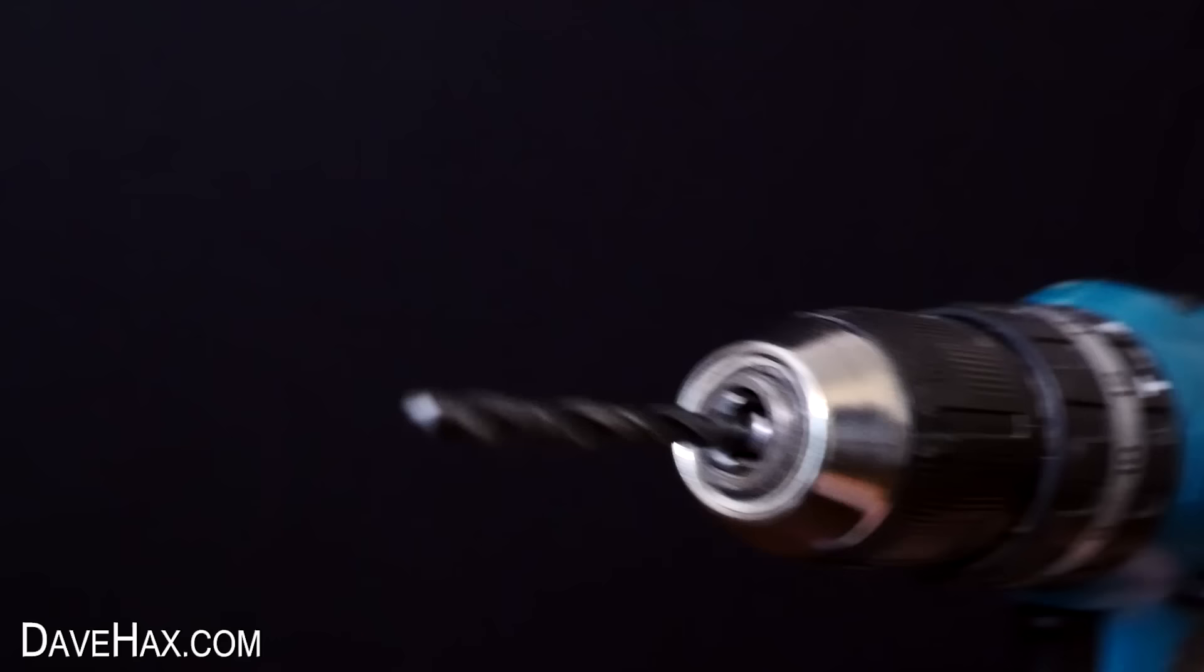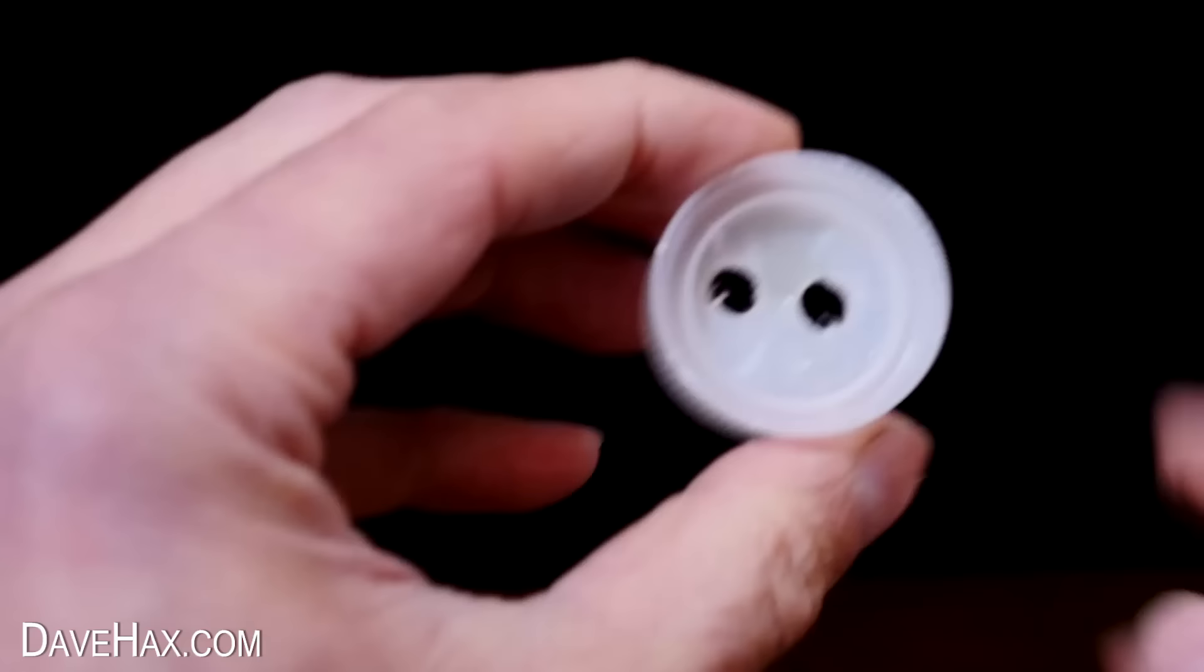Next we need to select a drill bit which is slightly bigger than our drinking straw diameter and use it to drill two holes side by side through our bottle top. Clean it up and it should look like this.